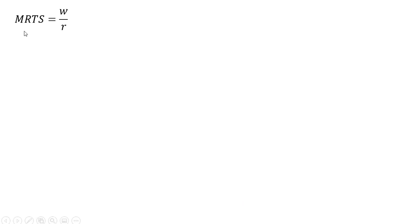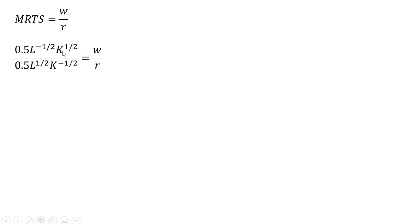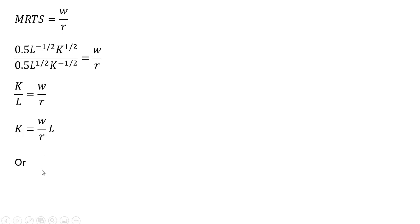Forming our cost-minimizing input condition, which states that the marginal rate of technical substitution equals the ratio of input prices — the price of labor over the price of capital. The MRTS is the marginal product of labor divided by the marginal product of capital. Substituting in our expressions, the 0.5's cancel, L to the minus one-half over L to the one-half leaves L in the denominator, and the K terms simplify to K in the numerator. Solving this for K, and also for L, which will be convenient later.